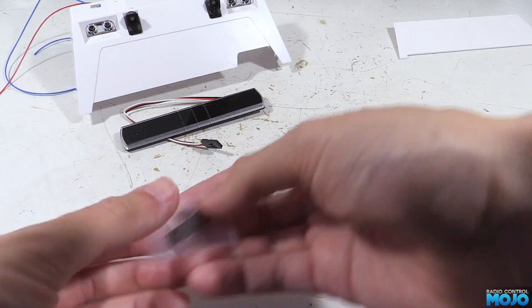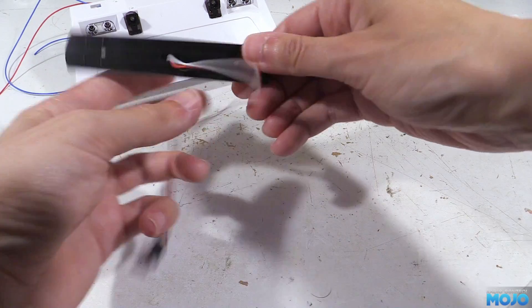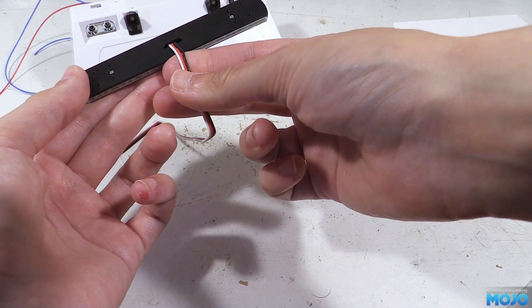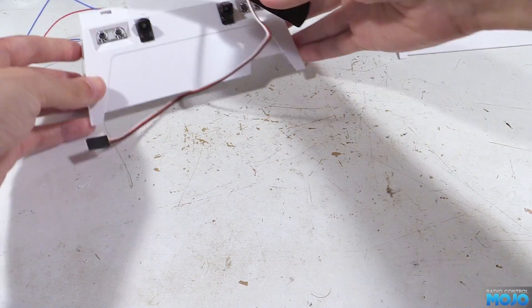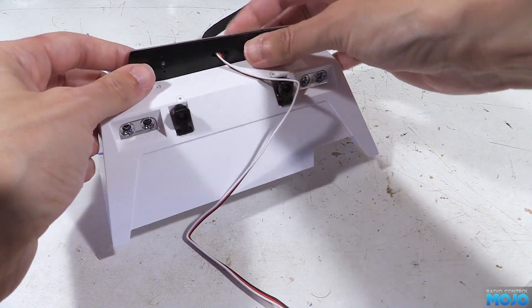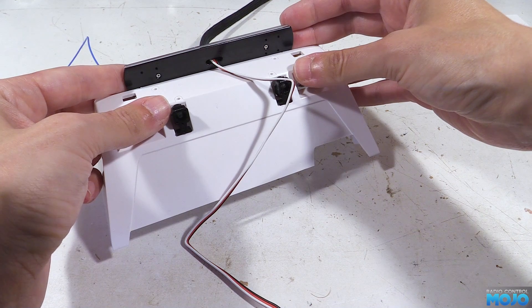Essentially you hook it up to a servo channel with a three position switch. Centre is normal, then if you flick it one way it'll change colour and if you flick it the other way it'll change the animation pattern. Nothing to it really.